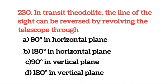Next question: In a transit theodolite, the line of sight can be reversed by revolving the telescope through 180 degrees in the vertical plane. Transit theodolite में line of sight को reversed किया जा सकता है telescope को vertical plane में 180 degree पर revolve करने के बाद।